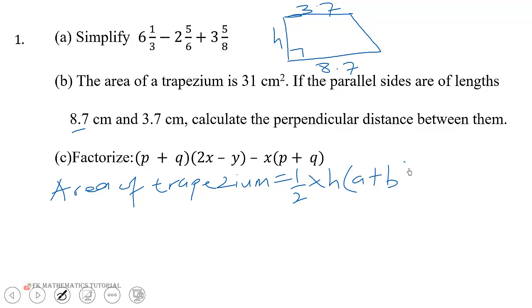So half times perpendicular height. Now we're given that the area is 31, so we have 31 centimeters squared is equal to 1 over 2 times the h, so the h is what we don't know, so we write it. Then we have 3.7 plus the 8.7.